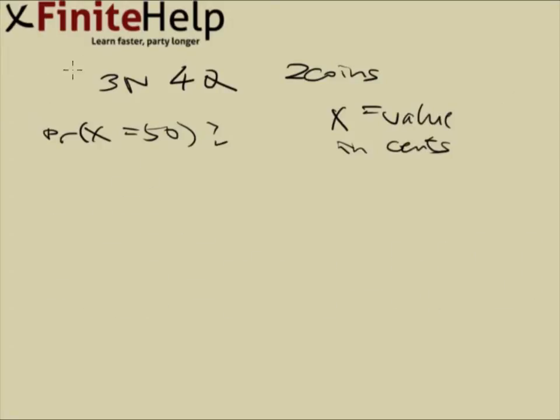This problem brought in a little bit of the idea of a random variable, but in effect all this is saying is translated to the probability of $0.50 from two coins, because X is value in cents. To have $0.50, the only possibility from these coins are going to be two quarters.